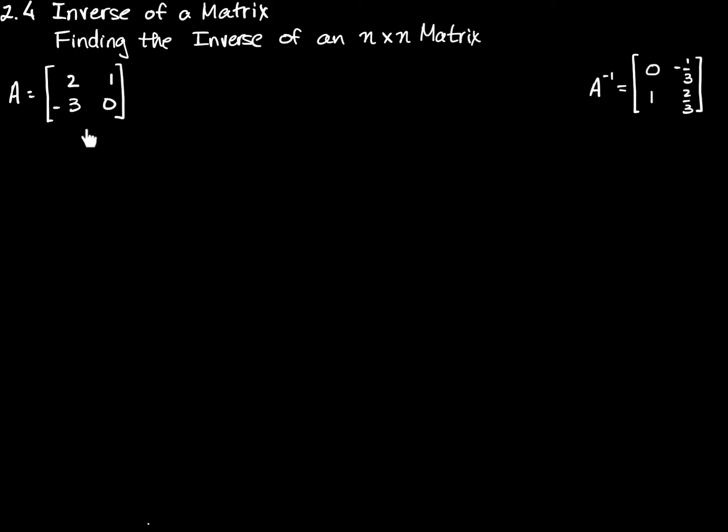If I do this new process on this matrix whose inverse we know and we get the same thing, then hopefully that will be sufficiently convincing that the process works. The way we've done it so far only works on 2 by 2 matrices, at least the algorithm. This technique will work on any square matrix 2 by 2 or larger, if it has an inverse, if it is invertible. We know this one is, so we're going to use this one to do this experiment first.